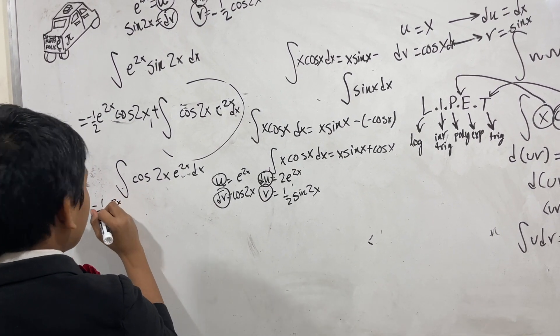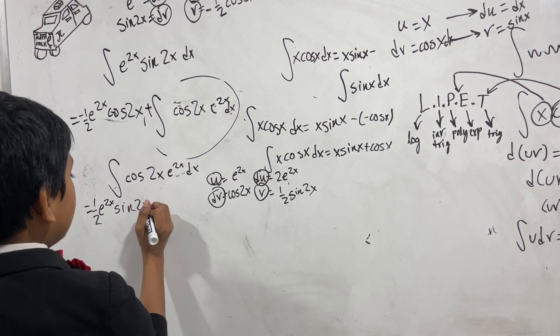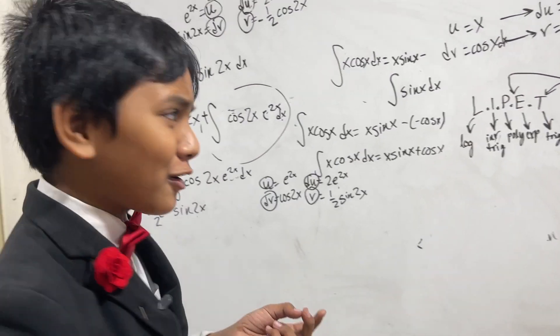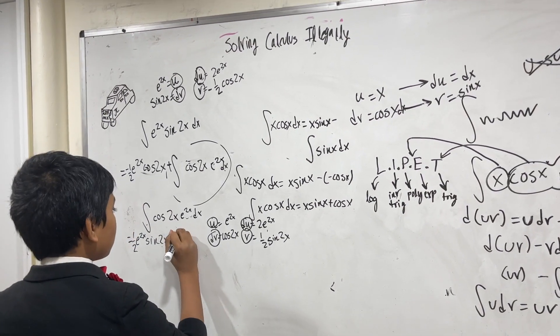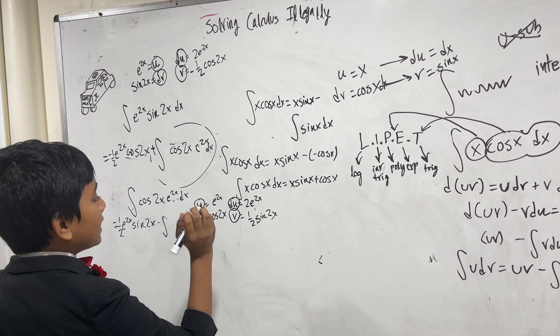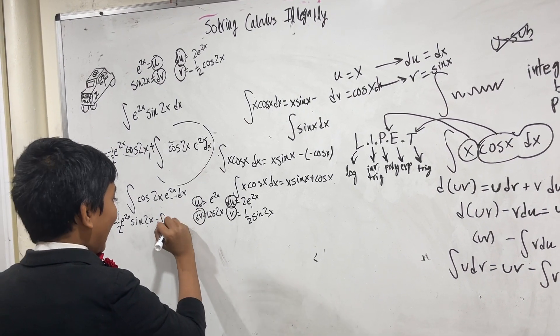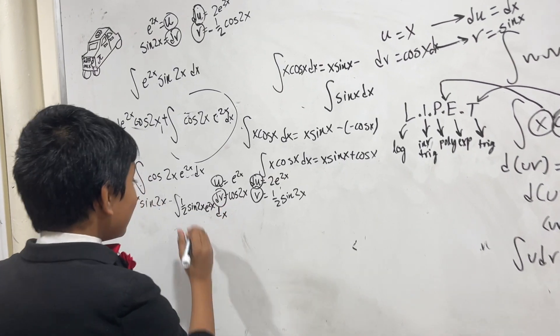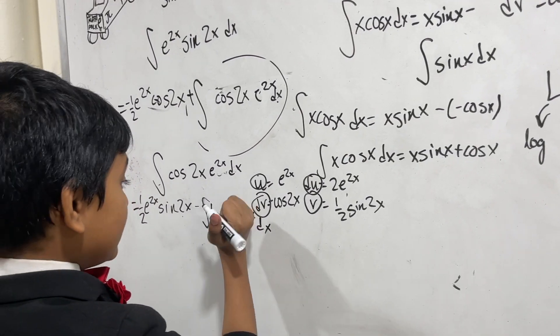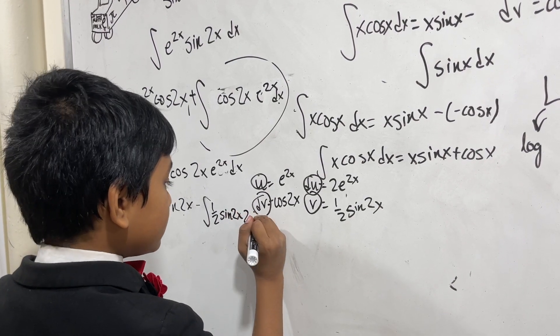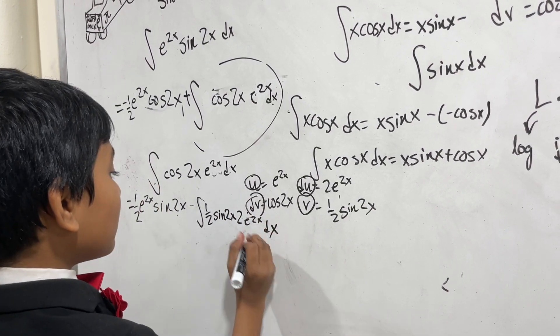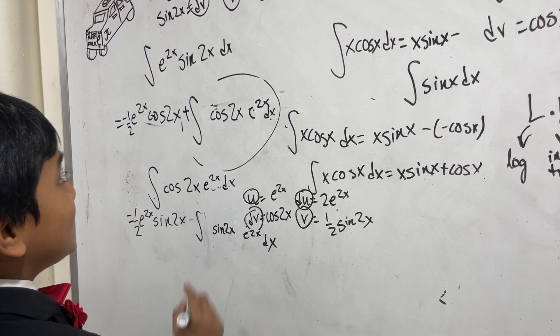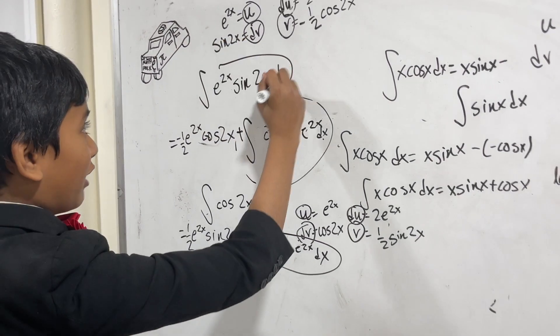e^(2x) times 1 half sine 2x is uv, and then you have, this is the really funny part, minus the integral of what is v times du, 1 half sine 2x times e^(2x). Do you see what's up with this? What I can do with this is unimaginable. Do you know why? You might notice that this is the exact same as the original integral that we were trying to find.